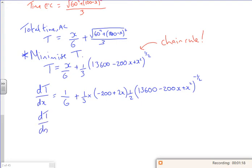I've got dT/dx, I've got 1/6, I've got plus 1/6. I'm just going to swap these two around inside the bracket, so I've got 2x minus 200, and then I've got 13600 minus 200x plus x squared, all to the power of minus a half.